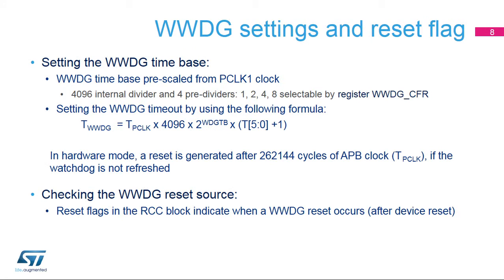The down-counter uses the APB1 clock divided by 4096 and again divided by a division ratio selected by the application. This division ratio can be 1, 2, 4, or 8 as defined in the WWDG CFR register. The formula shown in this slide lets you determine the watchdog timeout value.